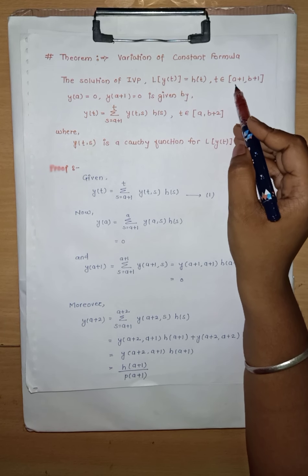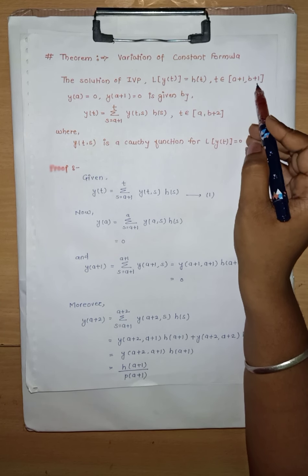Good morning students. I am Sonalia Nanta Hivrade and we are here to discuss the Difference Equations paper 2 of MSc second year. We will today see lecture number 5, as we have last seen the Cauchy function and some examples and theorems over it. In today's lecture we will see the variation of constants formula, the corollary, and some examples depending on it.